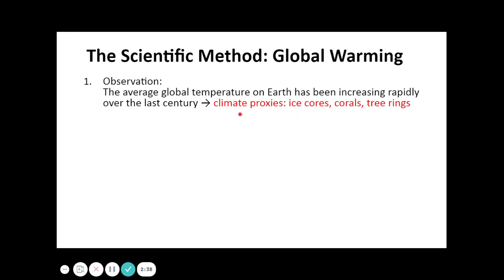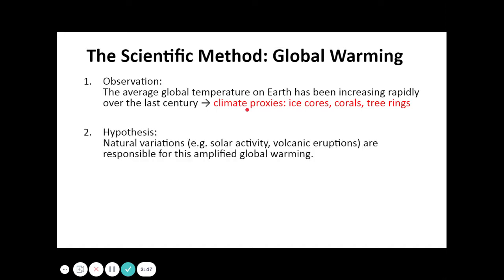There are also measurements using advanced equipment that show the global temperature is actually increasing. The hypothesis is that natural variations cause these sudden changes. For example, the volcanic eruption of Mount Pinatubo caused global cooling the year after. In this case, natural phenomena such as volcanic eruptions and solar activity are considered responsible for this amplified global warming.